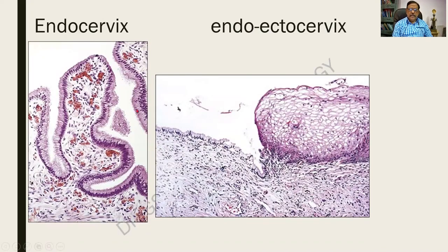This is the normal histology of the endocervix. In the cervix, you have got two parts — the endocervix and the ectocervix. The endocervix is lined by tall columnar cells with clear cytoplasm and basal nuclei, and it is also undulating or thrown into folds. This is the connective tissue, and the dark red areas are the blood vessels. This is the junction of the endocervix and the ectocervix. The ectocervix is lined by stratified squamous epithelium and the endocervix by columnar epithelium, and this is the stroma.